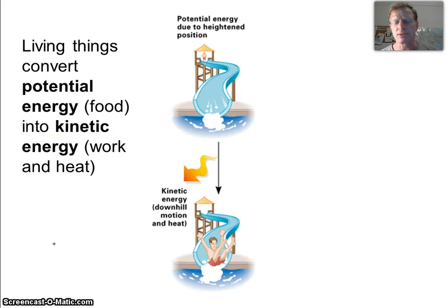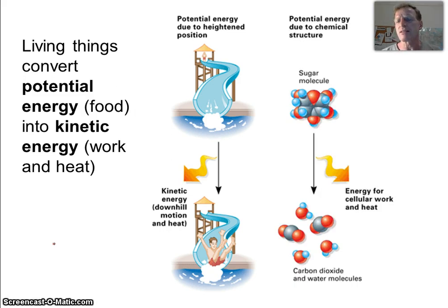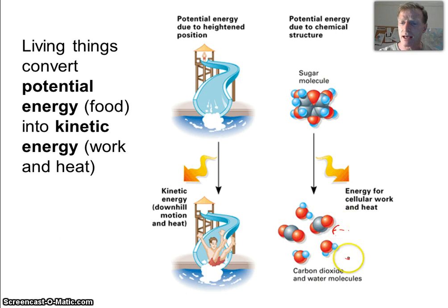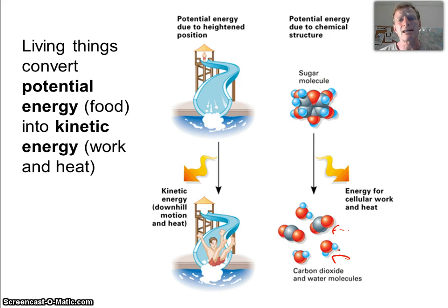We have kinetic energy and potential energy. Sliding down the slide is kinetic; being up at the top of the slide is potential energy. In living systems, that potential energy is in the form of organic molecules like sugar, glucose, or fat — triglyceride molecules. They have a lot of energy in the covalent bonds. When we break those bonds to produce low-energy molecules, that releases energy. That allows our bodies to transform potential energy into kinetic energy — motion, pumping things in and out, muscles contracting, and all the things we need to do.